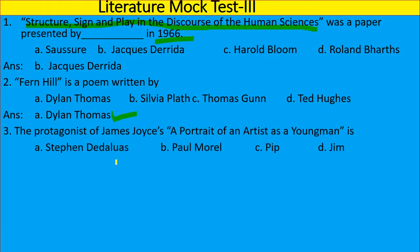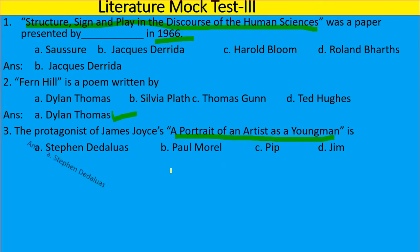Question 3: The protagonist of James Joyce's novel 'The Portrait of an Artist as a Young Man' is — Stephen Daedalus, Paul Morrill, Pip, or Jim? The right answer is Stephen Daedalus. Paul Morrill relates to 'Sons and Lovers'; Pip relates to 'Great Expectations' by Charles Dickens; Jim can be seen in 'Huckleberry Finn'.